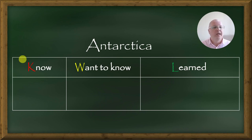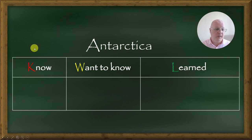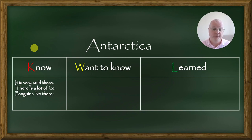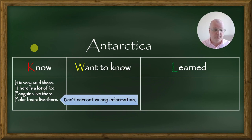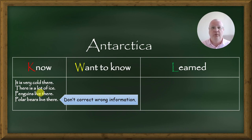In this part of the lesson, brainstorm everything your students know about Antarctica and write it down for everyone to see. Your students may say things like: it is very cold there, there is a lot of ice, penguins live there, or polar bears live there. This information is incorrect, but do not correct wrong information just yet. You will correct it later as you proceed with your lesson, or your students are going to correct it themselves when they realize they made a mistake.